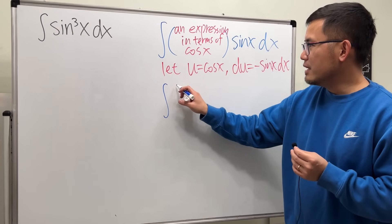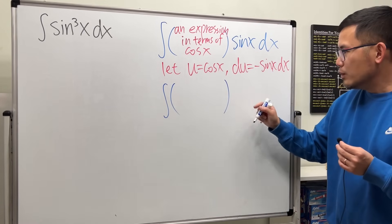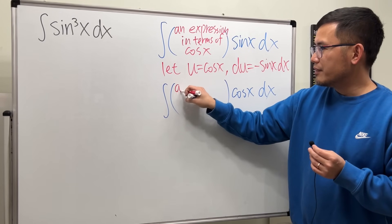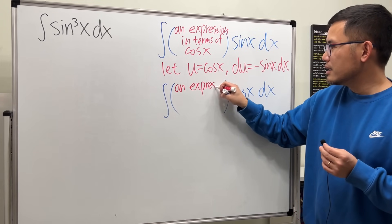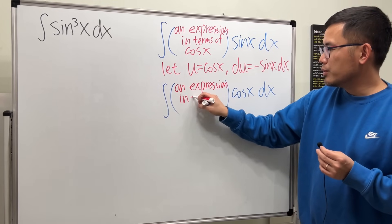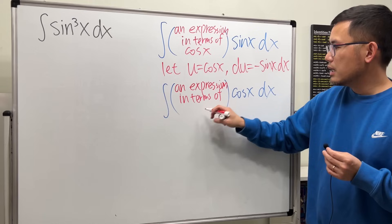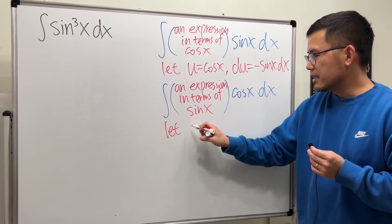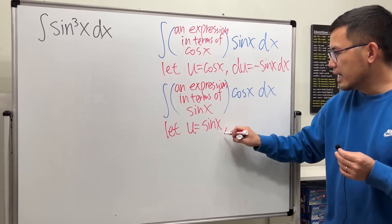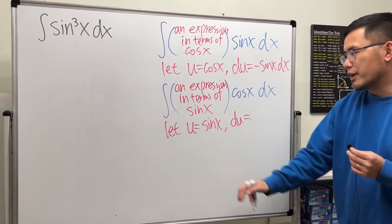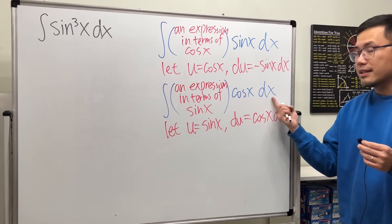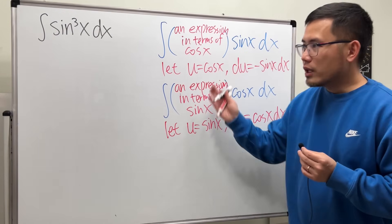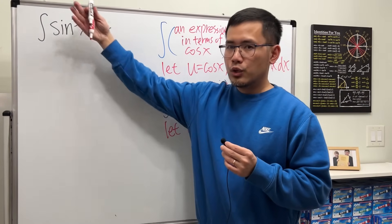Similarly, if we have an integral and on the outside we see a cosine factor, then we wish to have an easy enough expression in terms of sine x. This way we can set u equal to sine x, and then du equals cosine x dx — which is right there waiting for us. This strategy works nicely when we have sine or cosine raised to an odd power.